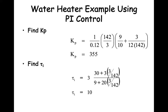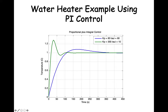Assuming proportional plus integral control, we use the equations shown to find Kp and tau i. In this case, Kp equals 355 and tau i equals 10. These are quite different from the numbers we used before. Here is a graph of the two responses using PI control and the unit step change. The blue line is the result using Kp equals 83 and tau i equals 60 — we don't get much overshoot, but it takes much longer to get within 5% of the final value, which is over 300 seconds. The green line is the response using Kp equals 355 and tau i equals 10. We have approximately 25% overshoot, which is acceptable for good control, and the response settles down to within 5% of the final value much faster, around 100 seconds.